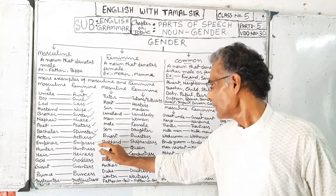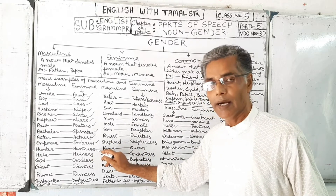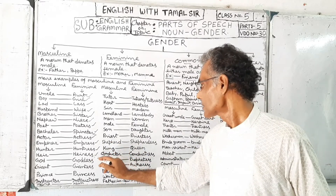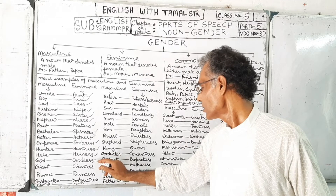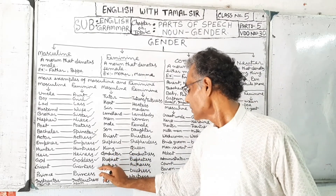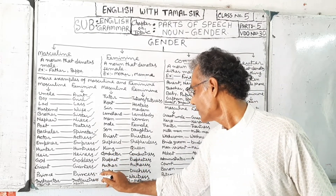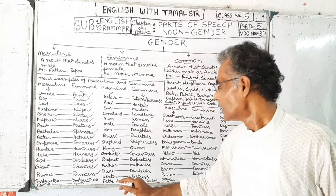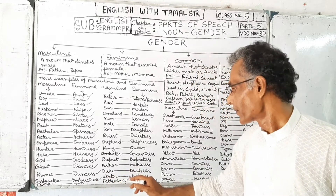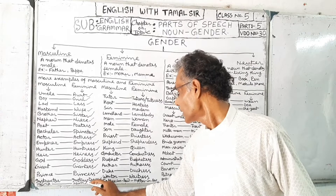Continuing masculine and feminine pairs: emperor / empress, hunter / huntress, god / goddess, prince / princess, instructor / instructress, monk / nun.